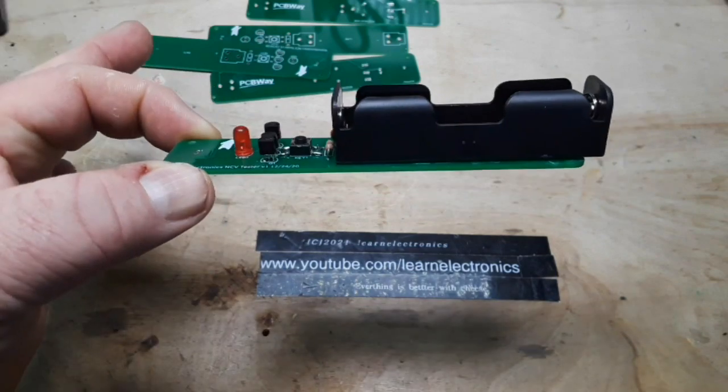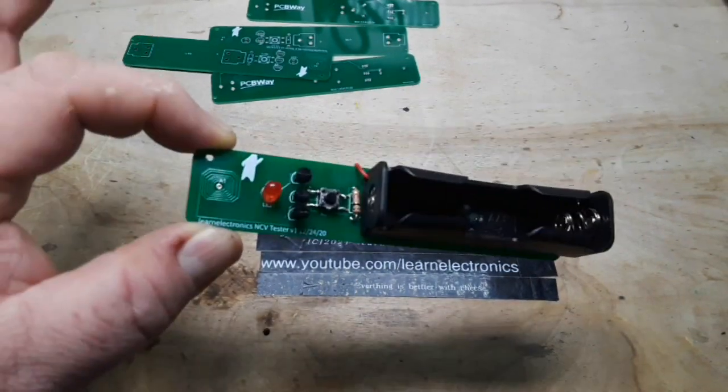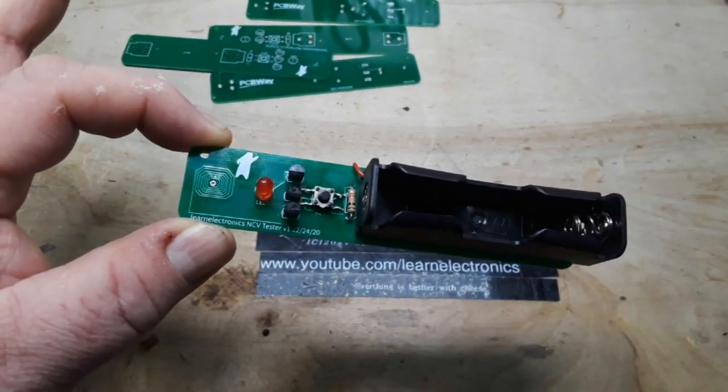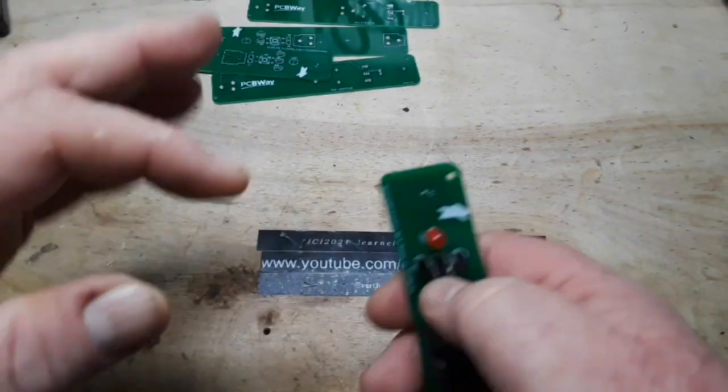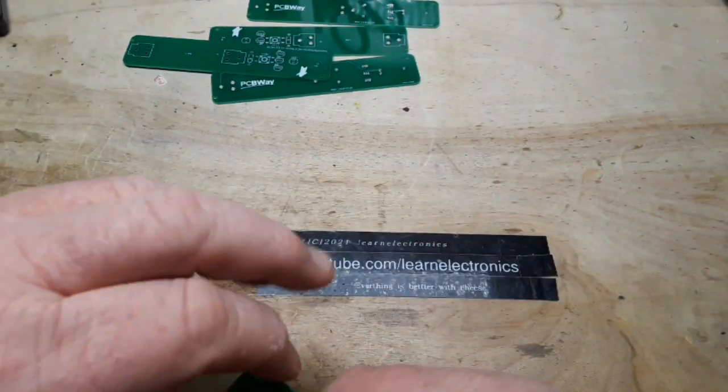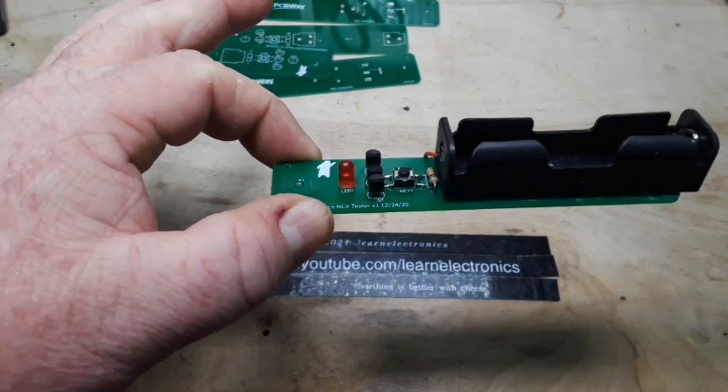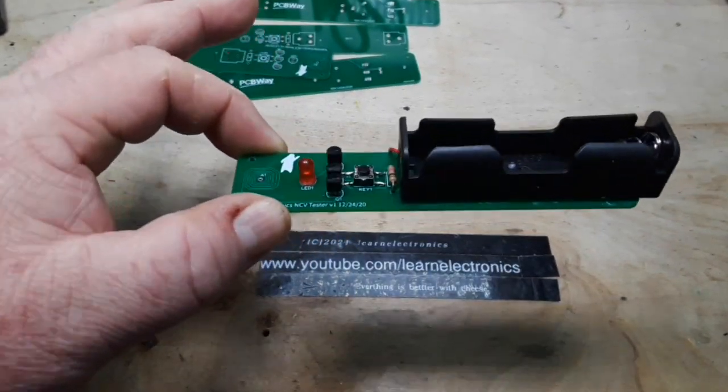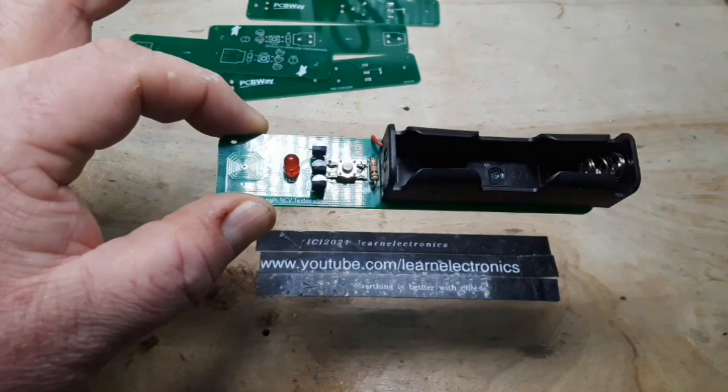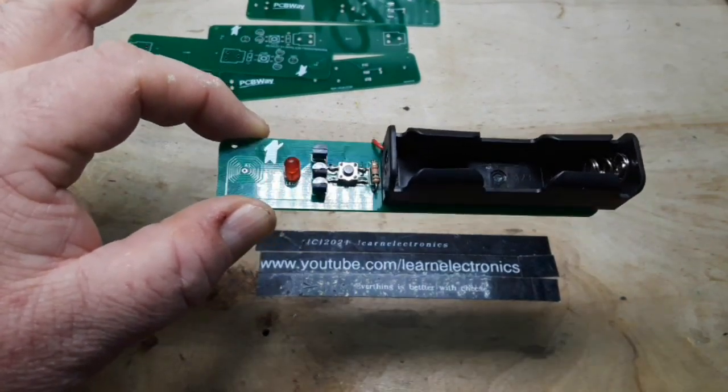So there it is, all nice and put together with an 18650 battery holder on it. And you can see you push the button there quite nicely. I used a red LED because it has the lowest forward voltage so it should be the easiest one to light. All that's left now is to test it out.